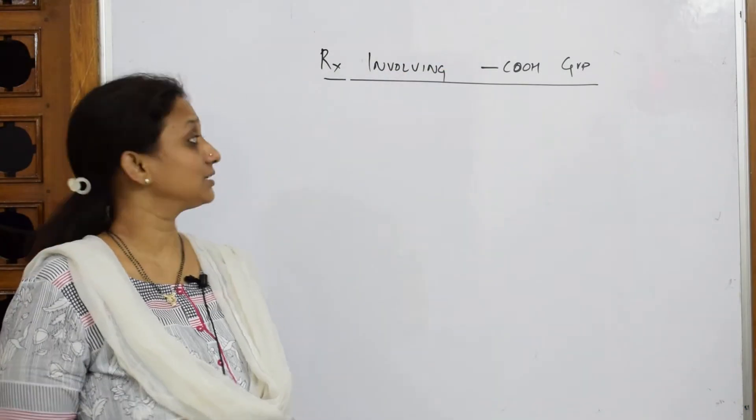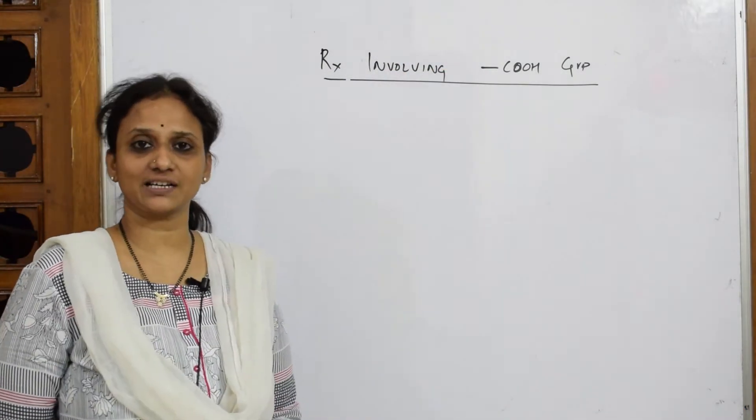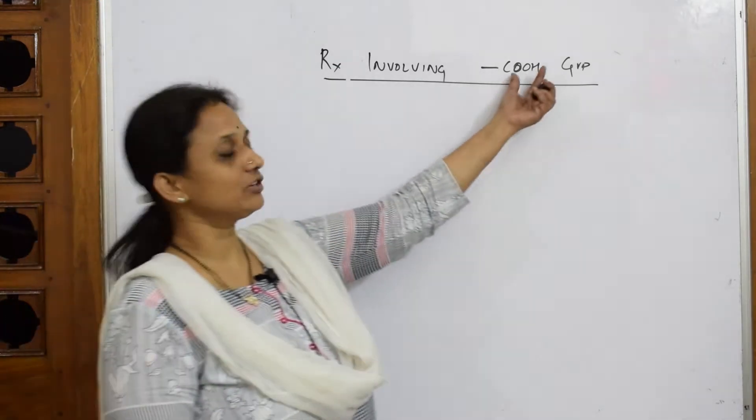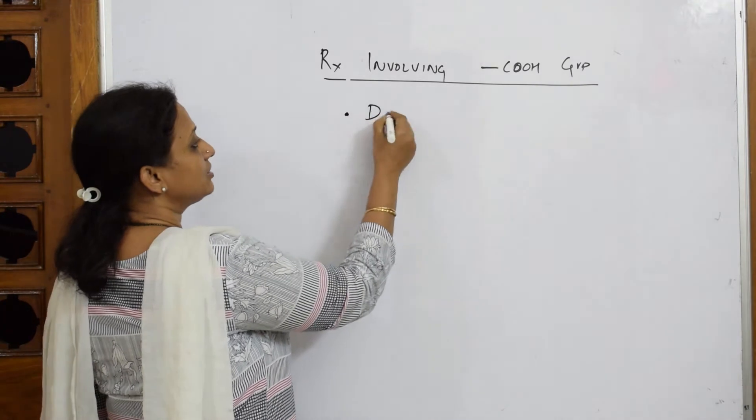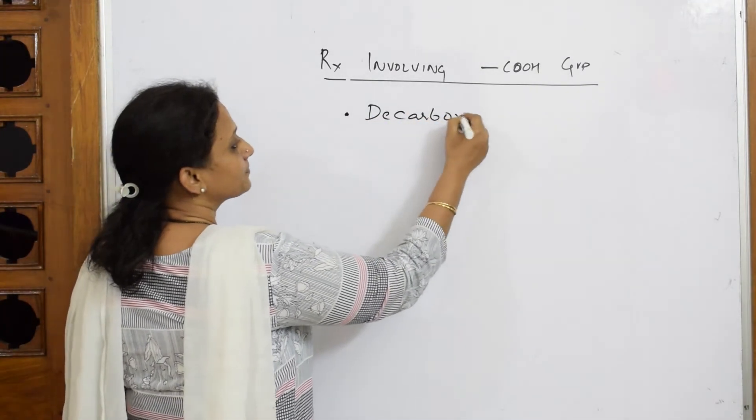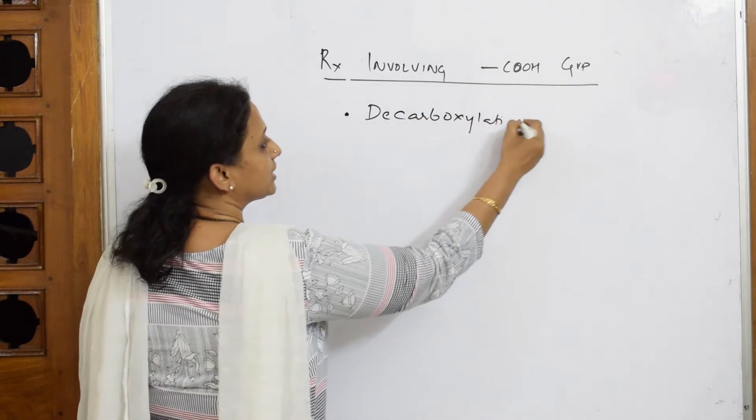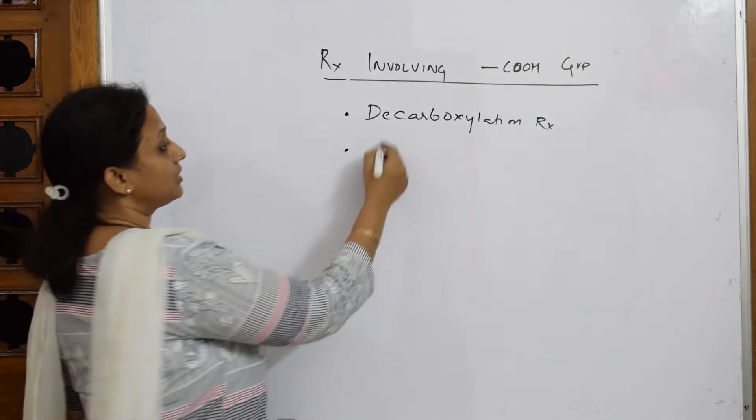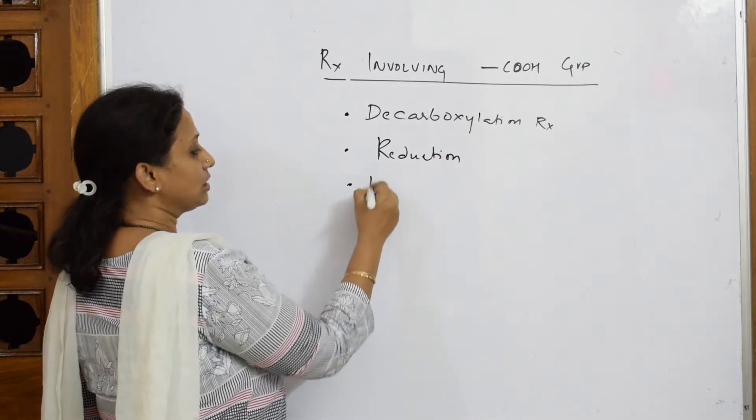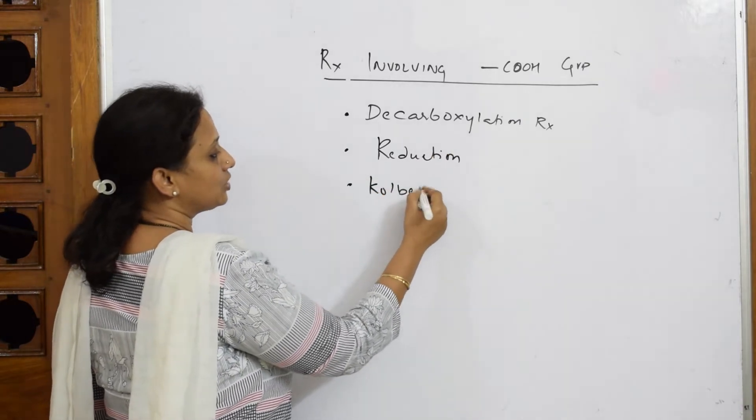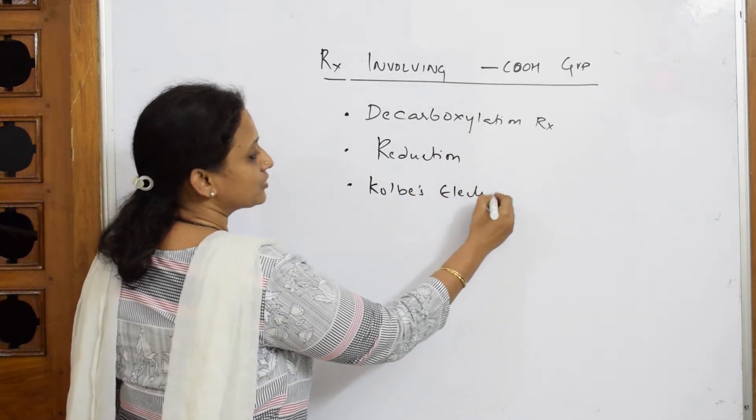So, let us start with this particular class of carboxylic acid reactions. This involves basically your COOH functional group. The reactions which we are going to study are decarboxylation reaction, reduction, and Kolbe's electrolytic method.